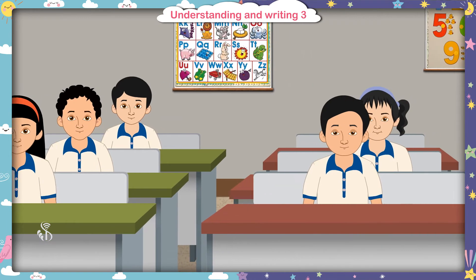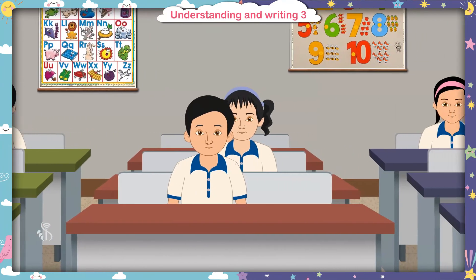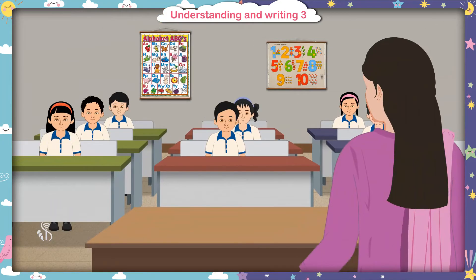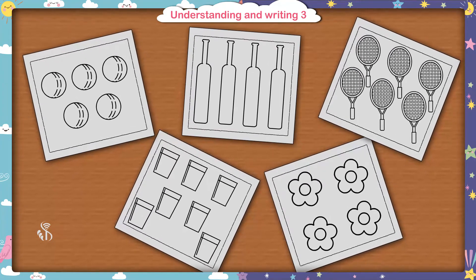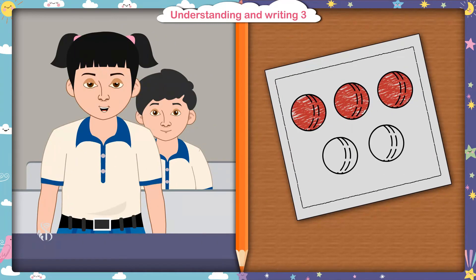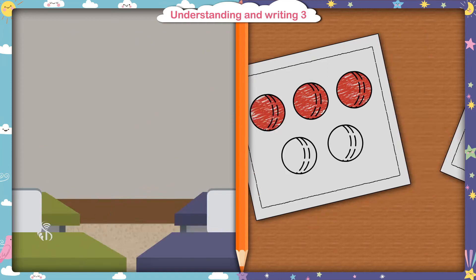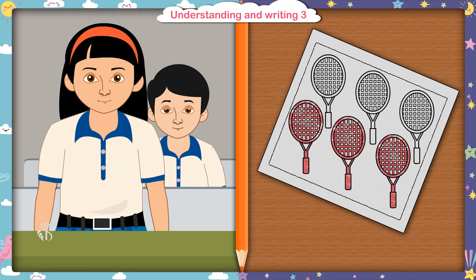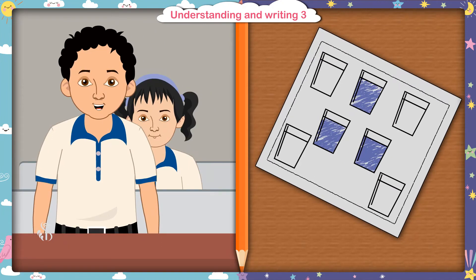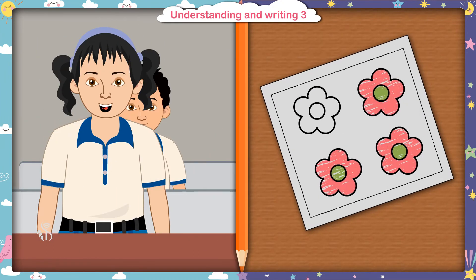A number of objects are given in this picture. You have to colour 3 objects from the picture. Let us see the picture. Madam, I have coloured 3 bats. Very nice. Madam, I have coloured these 3 balls. Well done. These are 3 rackets. Wow. Madam, I have coloured 3 glasses. Madam, I have coloured 3 flowers. That's great.